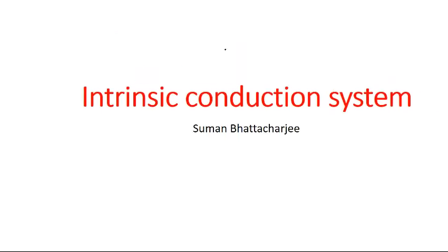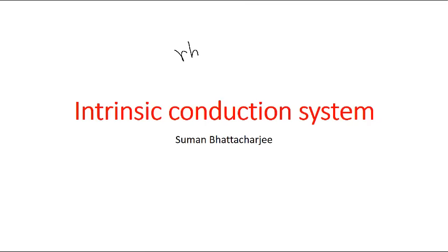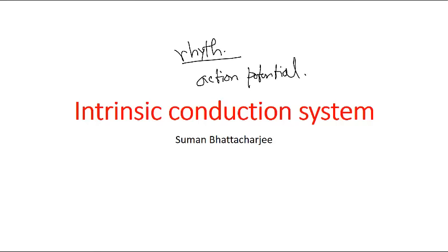The intrinsic conduction system sets the basic rhythm that the heart is beating, and it consists of auto-rhythmic cardiac cells that initiate and distribute the same type of impulse throughout the heart — that is known as the action potential. The action potential of the cardiac cells ultimately helps to generate and move that cardiac rhythm from one area of the heart to the next.